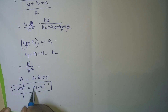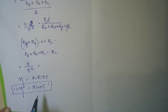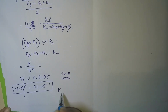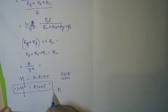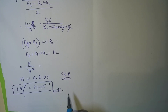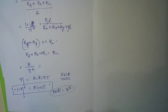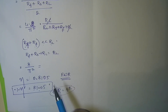Therefore, efficiency equals 0.8105, or 81.05%. This is the percentage efficiency of the full wave rectifier. Comparing this to the half wave rectifier, which had an efficiency of 40.6%, the efficiency has now been doubled — we are getting more output from the full wave rectifier.